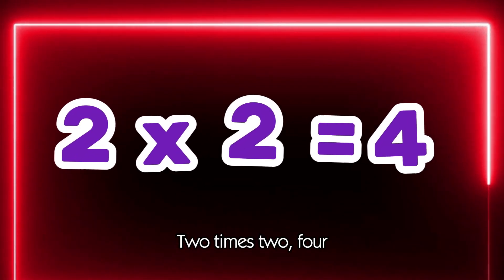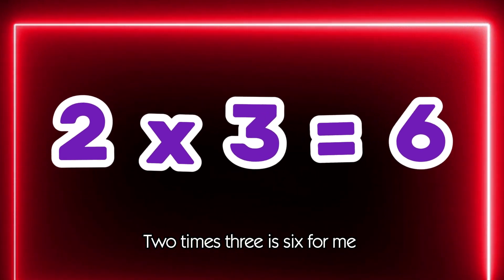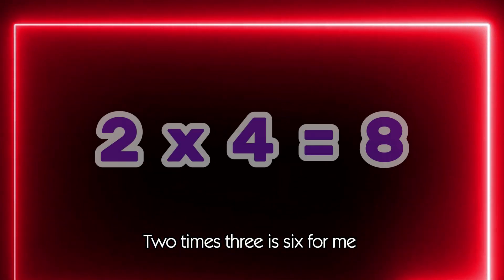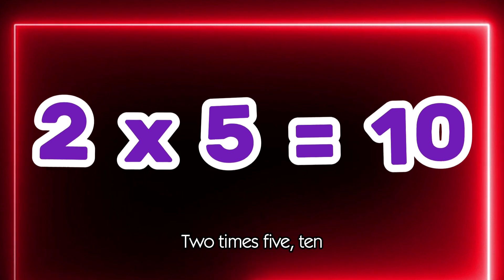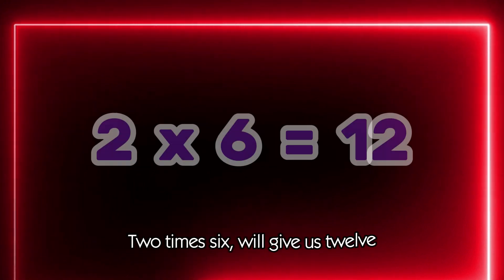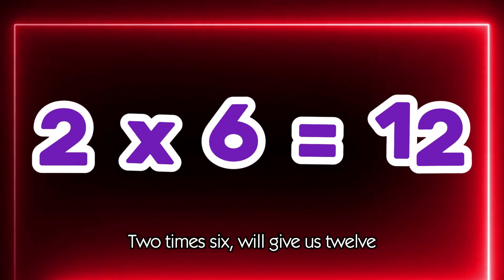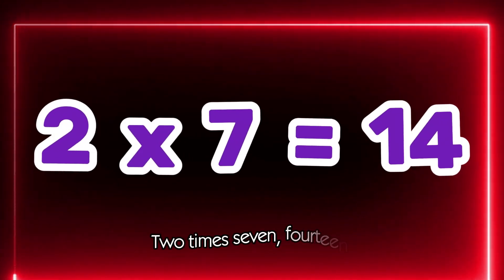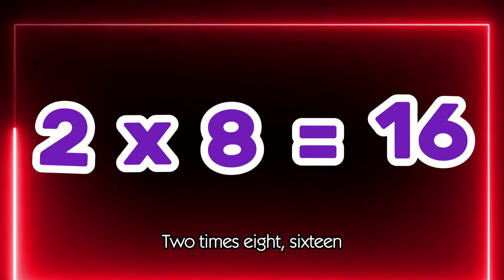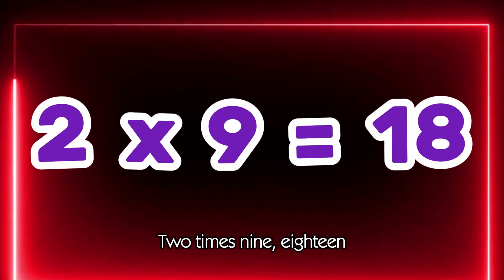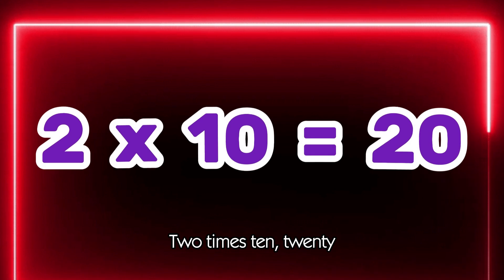2 x 1, 2. 2 x 2, 4. 2 x 3, 6 for me. 2 x 4, 8. 2 x 5, 10. 2 x 6 will give us 12. 2 x 7, 14. 2 x 8, 16. 2 x 9 is 18. 2 x 10, 20.